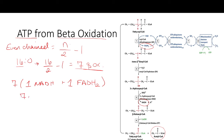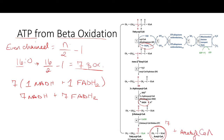We also make 7 molecules of acetyl-CoA during those seven rounds, and we're left with another molecule of acetyl-CoA at the end. So in total we have 8 molecules of acetyl-CoA that can go into the citric acid cycle. We'll look at how much ATP that generates in a moment.